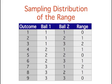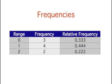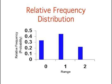It's important to keep in mind that every statistic — not just the mean — has a sampling distribution. This table shows all the possible outcomes for the range of two numbers. This table lists the frequencies of each range. This graph illustrates the sampling distribution of the range for this discrete distribution.